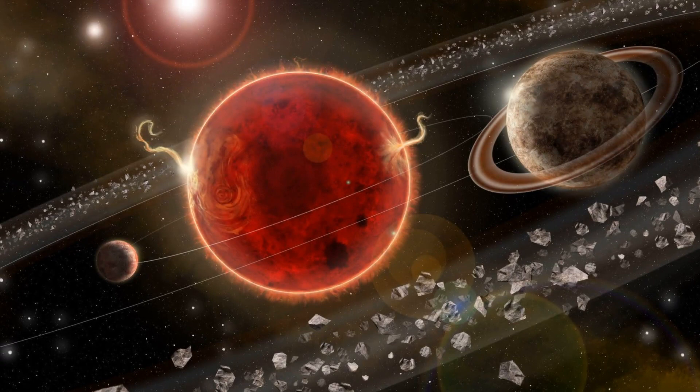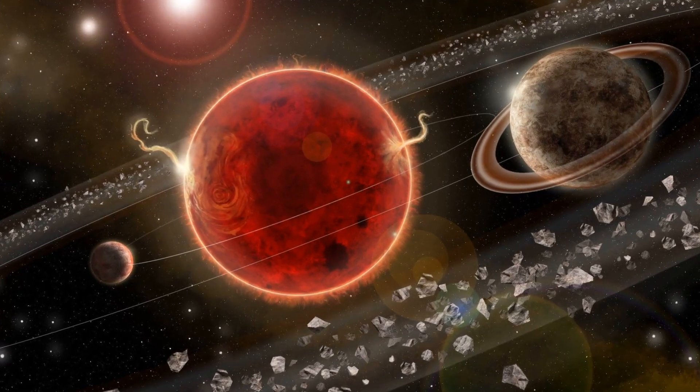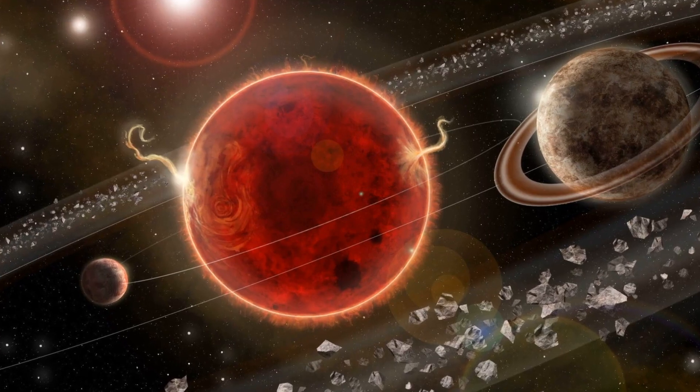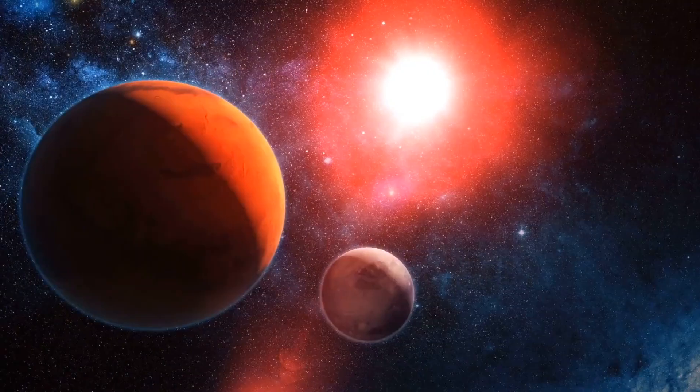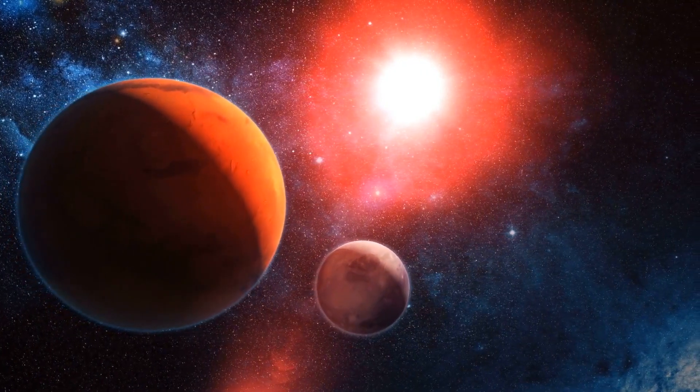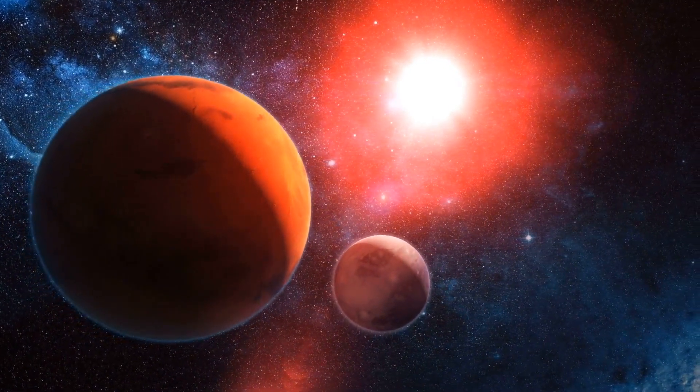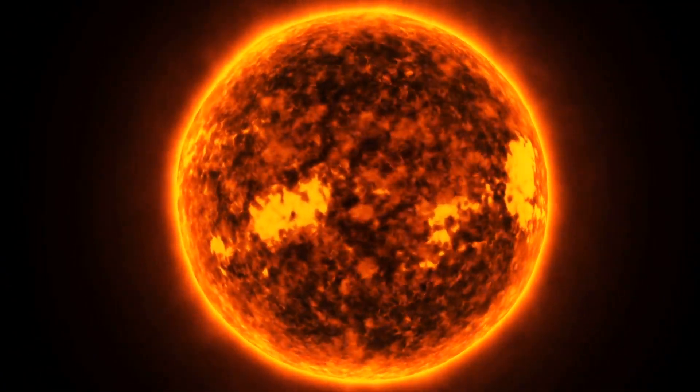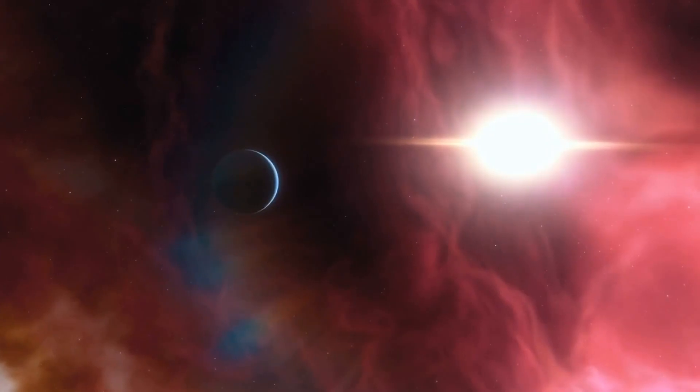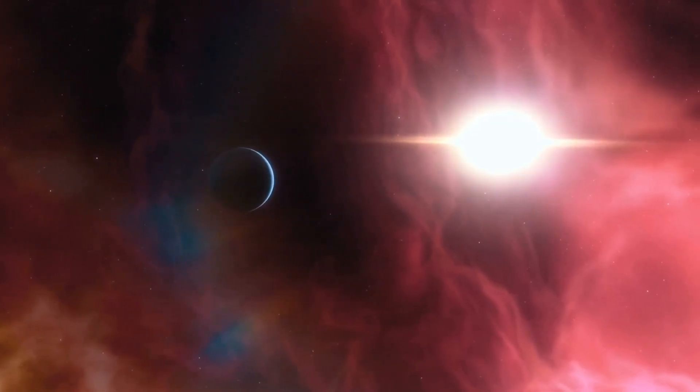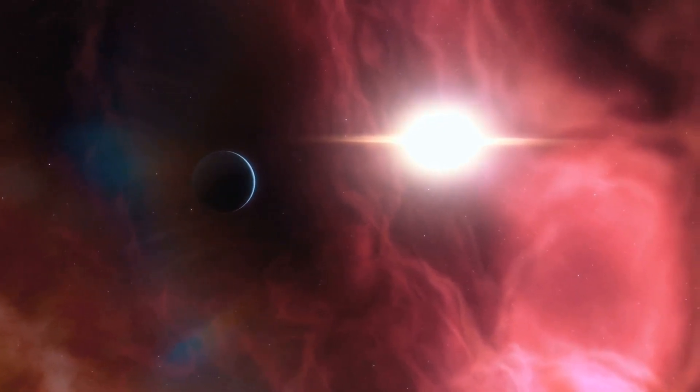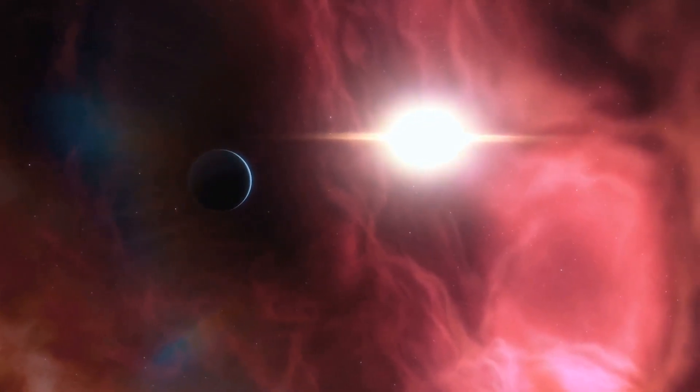As a red dwarf, Proxima Centauri is the energy-efficient superstar of the cosmos, relying on internal convection processes to shine for trillions of years. It is expected to stay in its main-sequence star phase for another 4 trillion years. However, being a red dwarf comes with a flare for the dramatic, with frequent and unpredictable flares. As a lightweight star, its habitable zone is closer compared to our Sun, estimated between 0.023 and 0.054 astronomical units.